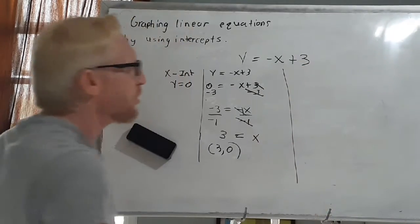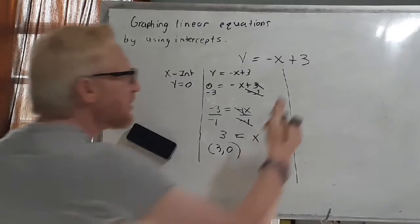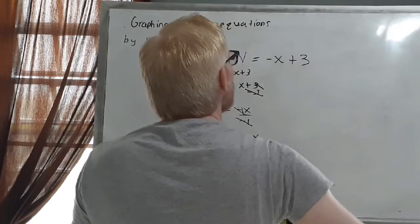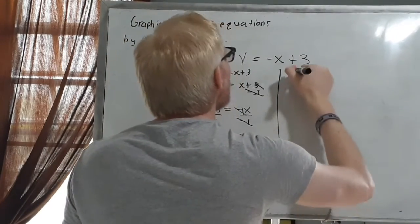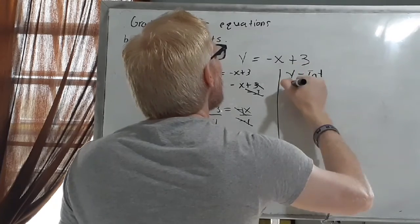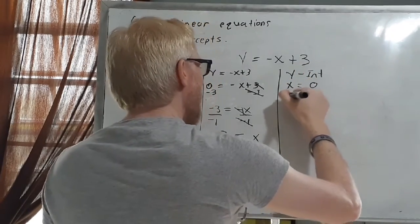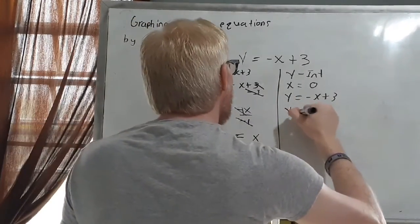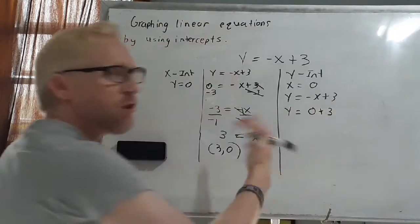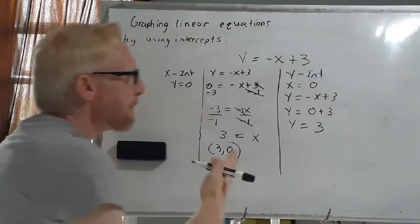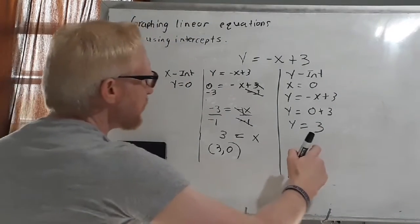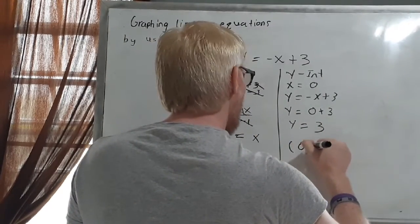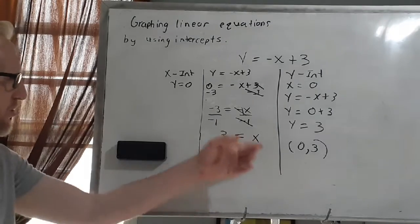Now we're going to look for our y-intercept. Always remember: when looking for the y-intercept, x equals 0. So instead of writing y equals negative x plus 3, I change the x to 0. Since 0 can't be negative, it's just 0 plus 3, and 0 plus 3 is 3. So y equals 3. Since x equals 0 when finding the y-intercept, my other ordered pair is (0, 3). So my two ordered pairs are (3, 0) and (0, 3).